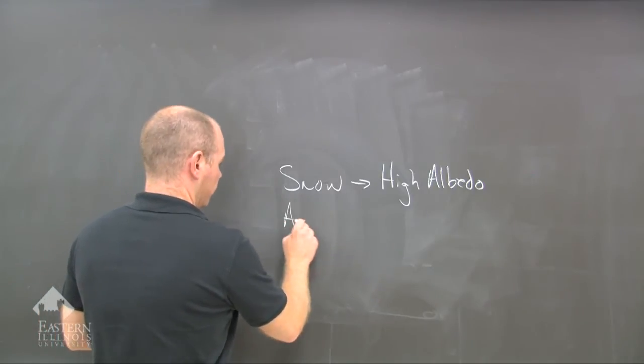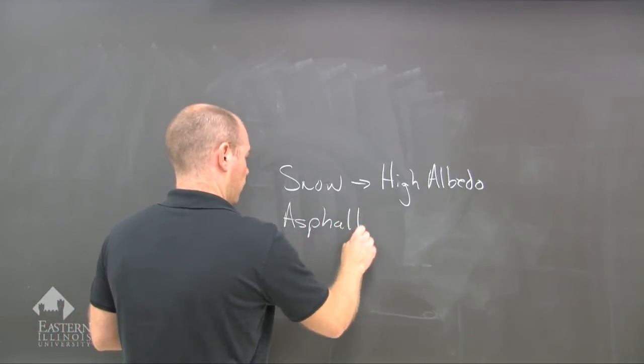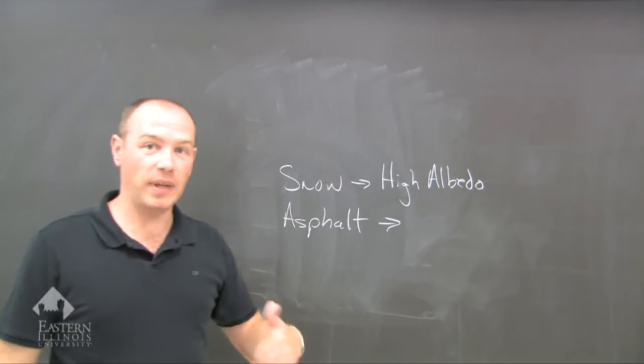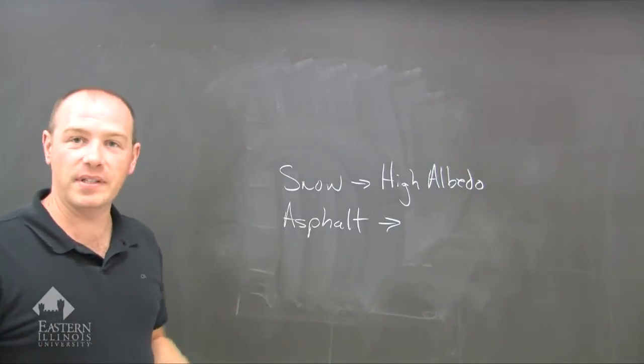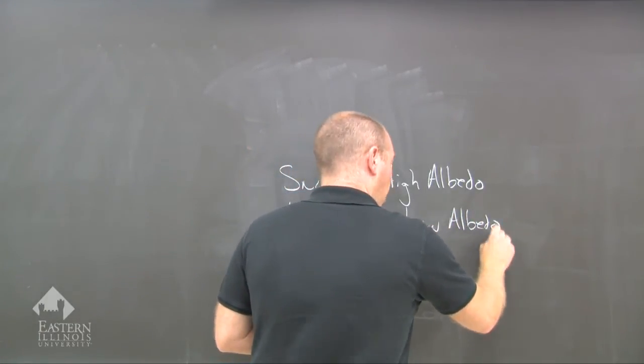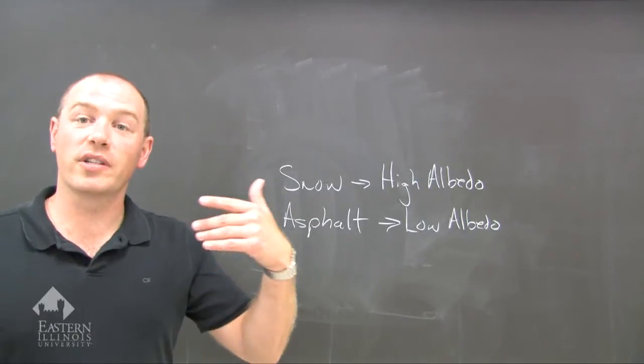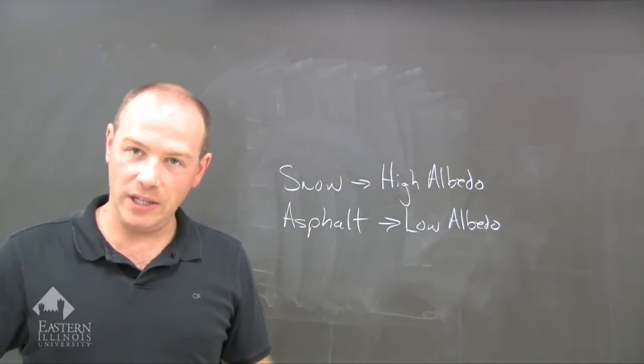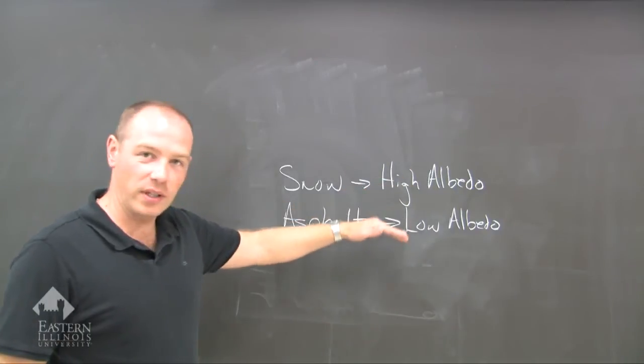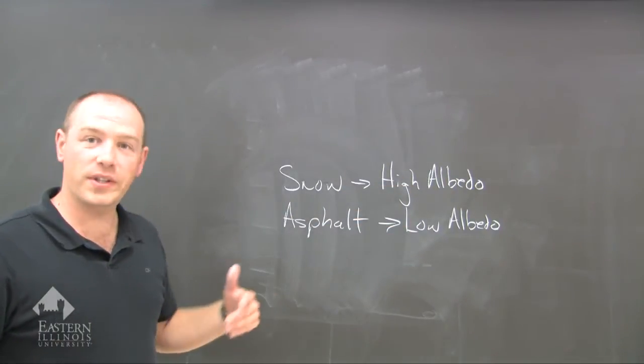On the other side of that, if you have asphalt, asphalt is black. It's a black top. And so what happens is it has a low albedo. And the low albedo means that there is more absorption of energy. So we can associate albedo, the quality of albedo, with temperature.